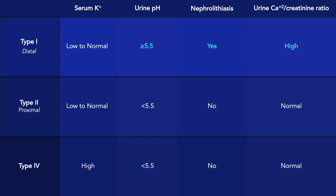So when it comes to differentiating between these three types of renal tubular acidosis, a high urine pH — that is, a pH higher than 5.5 — would suggest type 1 RTA, along with nephrolithiasis and a high urine calcium-creatinine ratio. On the other hand, a high serum potassium would suggest type 4 RTA. But if neither the serum potassium is elevated nor the urine pH, then we may be dealing with type 2 RTA.